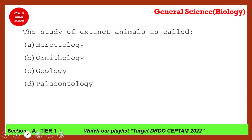The study of extinct animals is called what? This is a very easy question. Most of you have given the right answer — the correct answer is option D, paleontology. Paleontology is the study of extinct animals.